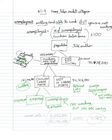Which would mean then that my unemployment rate would equal 6,652,000 over 161,146,000. Multiply that all by 100.